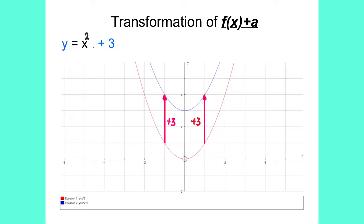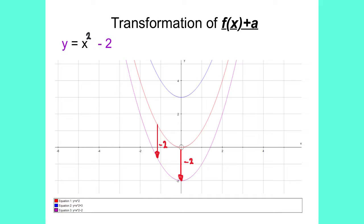If we now draw the graph y equals x squared plus 3, that is the graph in blue, you can notice that every point from the red graph has been moved up the y-axis three spaces. If we now draw the graph y equals x squared minus 2, you can notice that the purple graph has been moved two spaces down the y-axis.